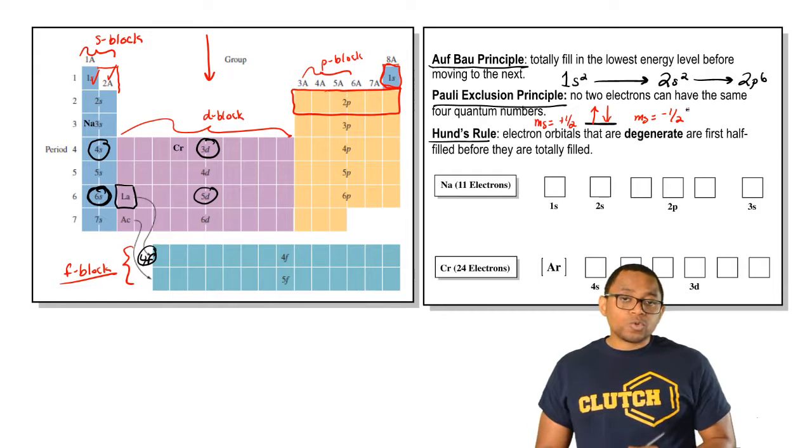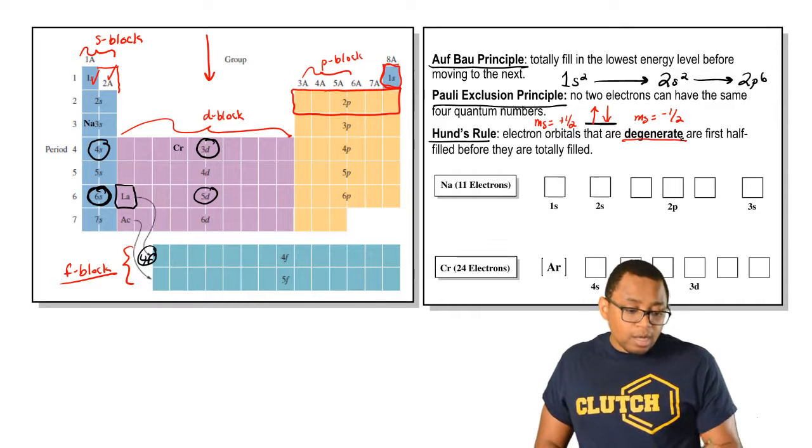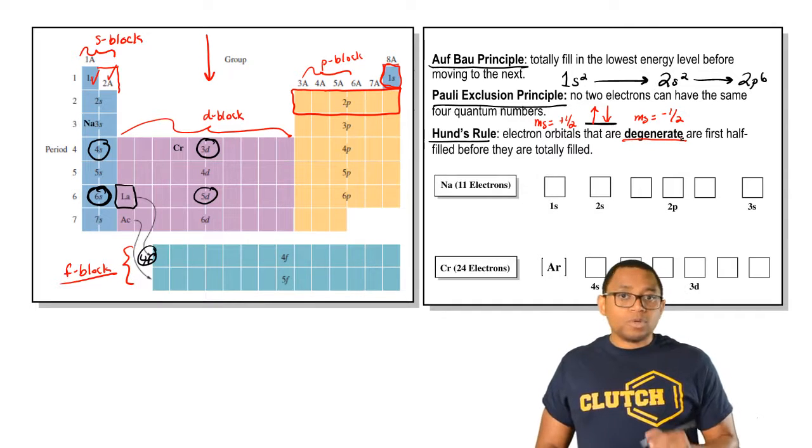Finally, Hund's rule. Hund's rule says that electrons that are of same energy or degenerate are first half filled before being totally filled.